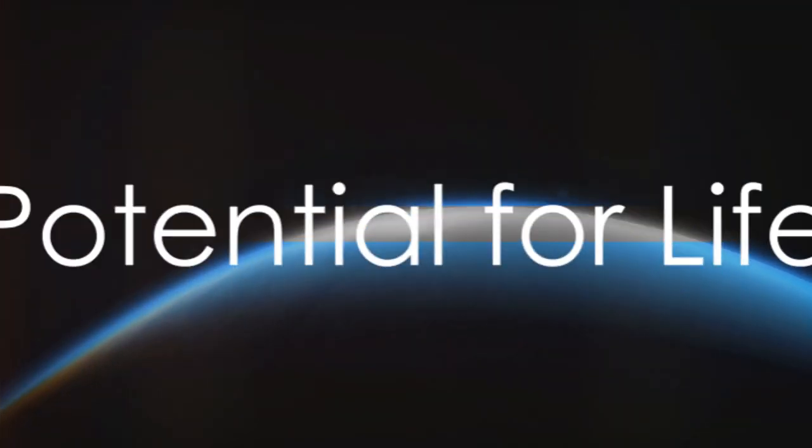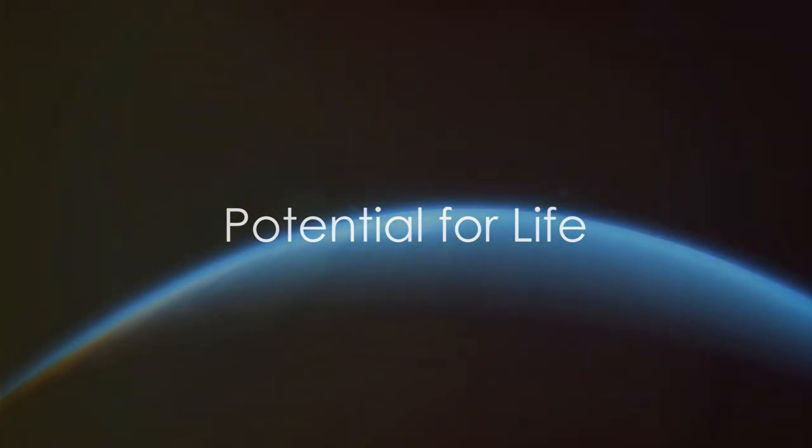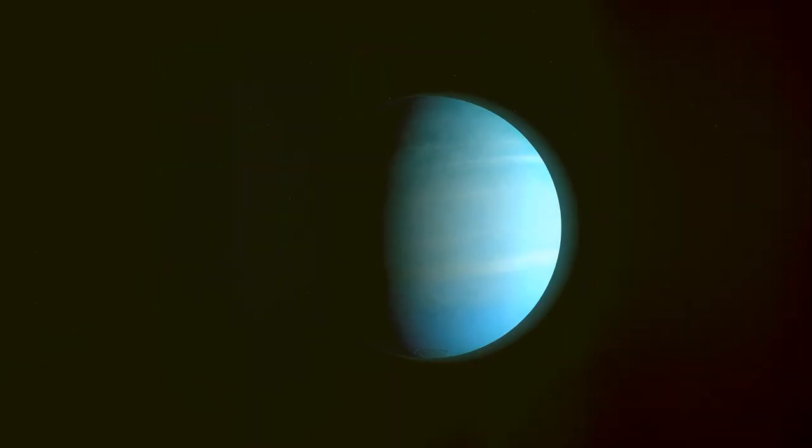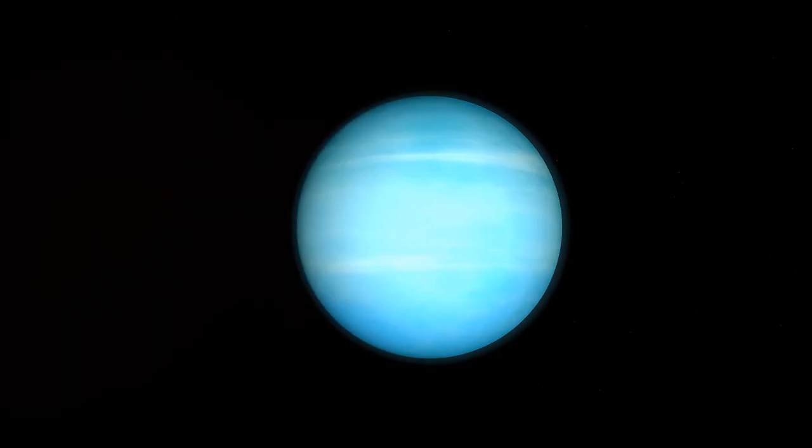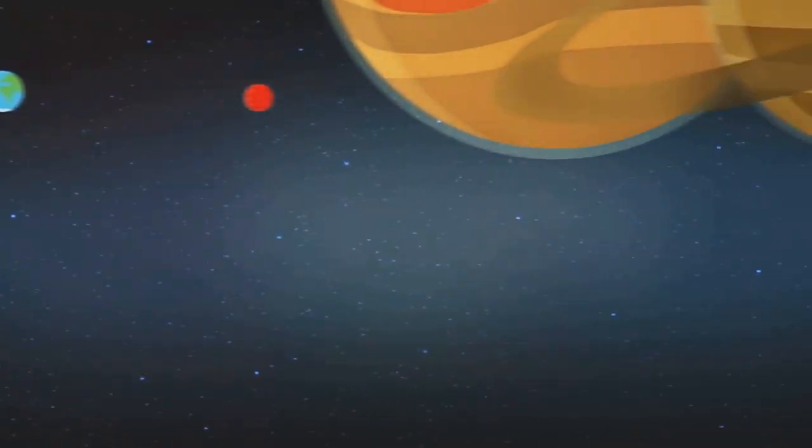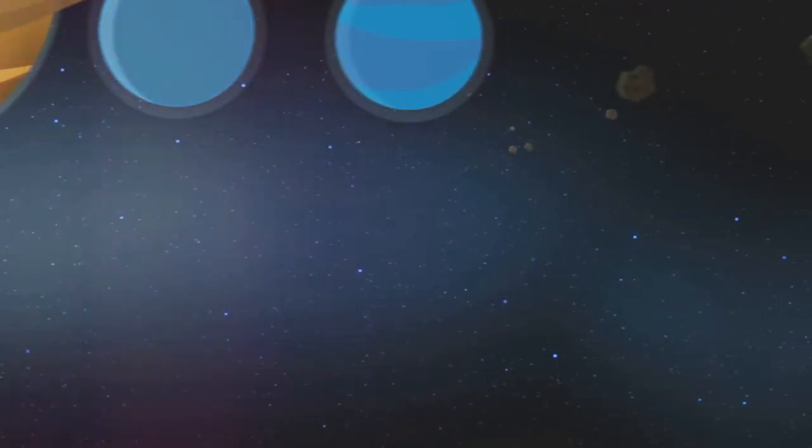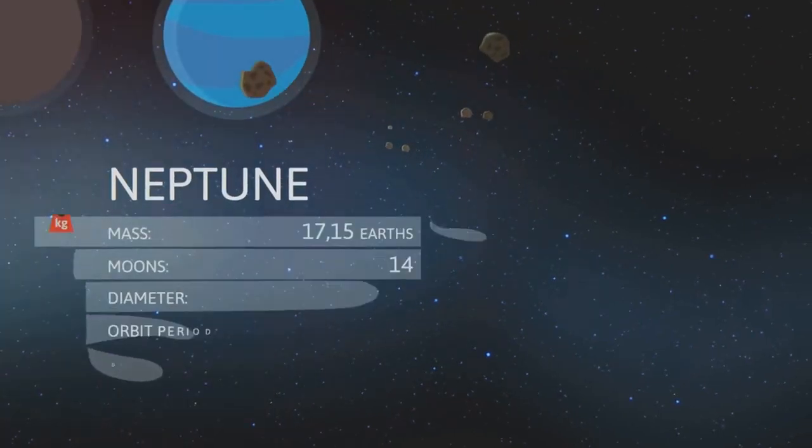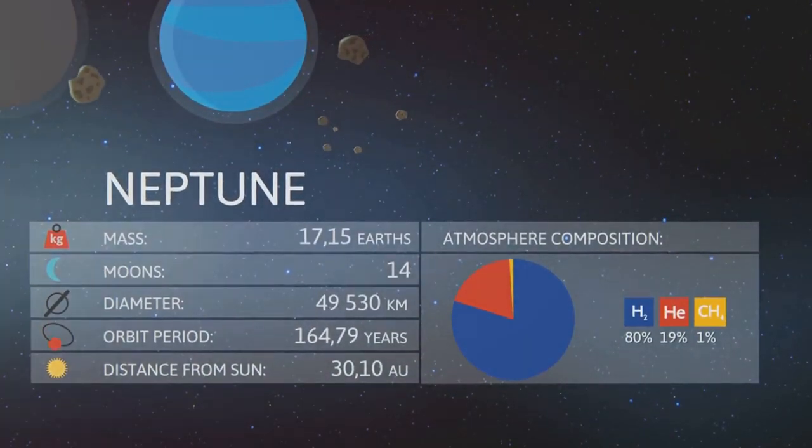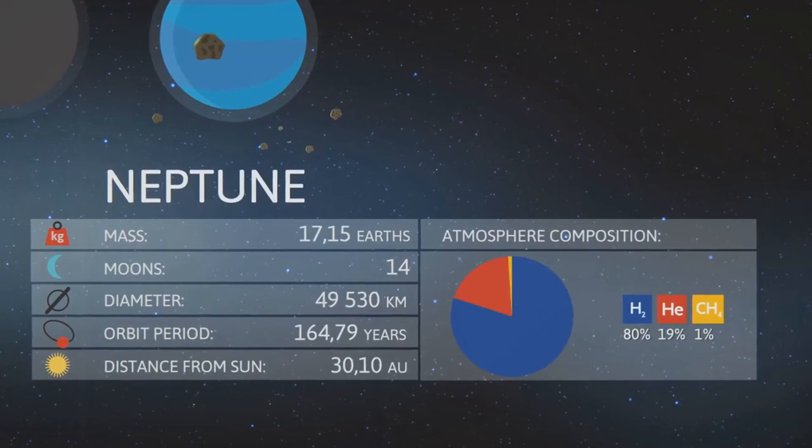Could life as we know it exist on Neptune? This is a question that piques the curiosity of many space enthusiasts. However, the prospects are quite bleak. Neptune's harsh conditions make it largely inhospitable for life as we understand it. Imagine trying to exist in a world where temperatures plummet to minus 352 degrees Fahrenheit, where winds reach supersonic speeds, and where the atmospheric pressure is staggeringly high.